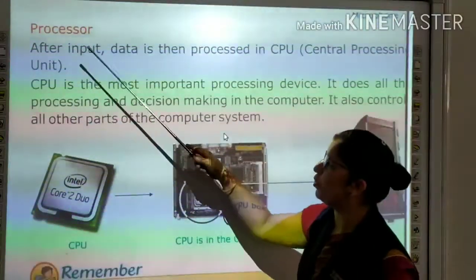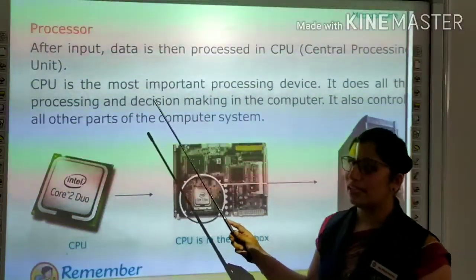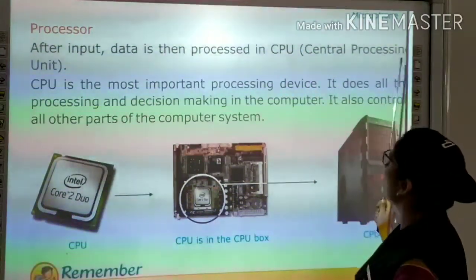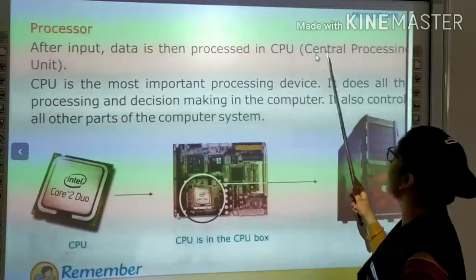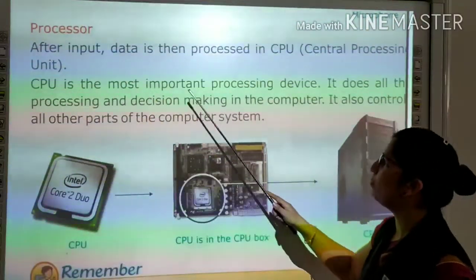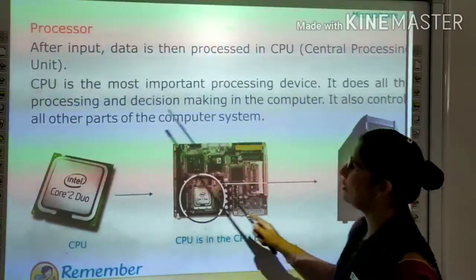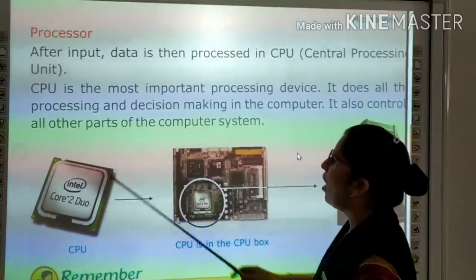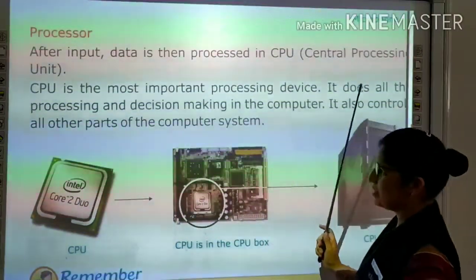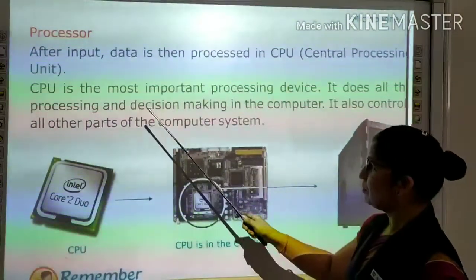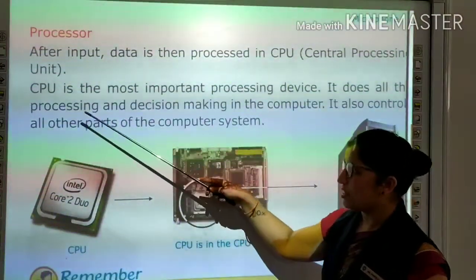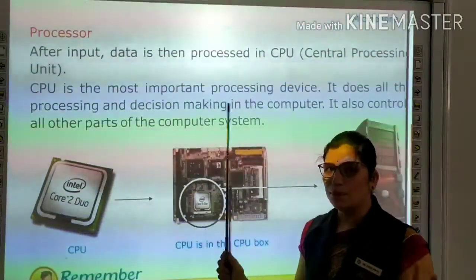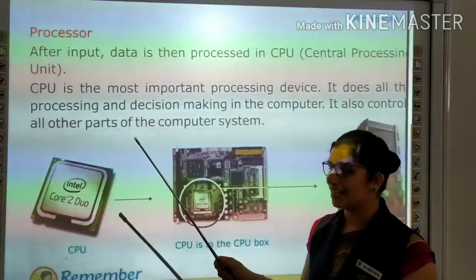Next is the processor. After input, data is then processed. Input data is processed in the CPU. CPU stands for Central Processing Unit. CPU is the most important processing device. It does all the processing and decision making in the computer, and it also controls all other parts of the computer system.